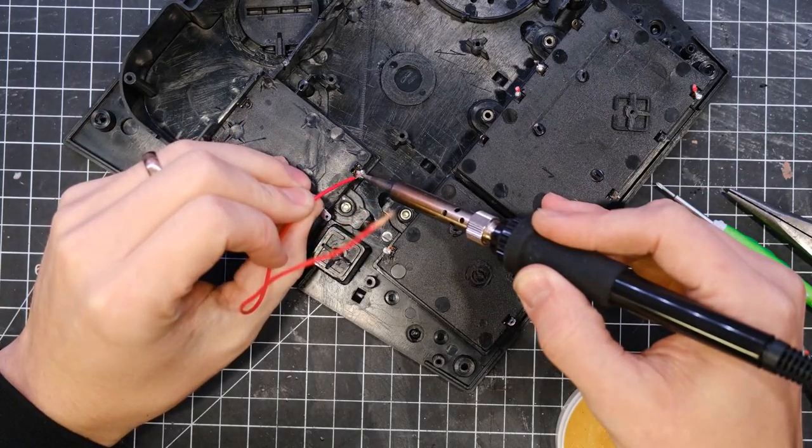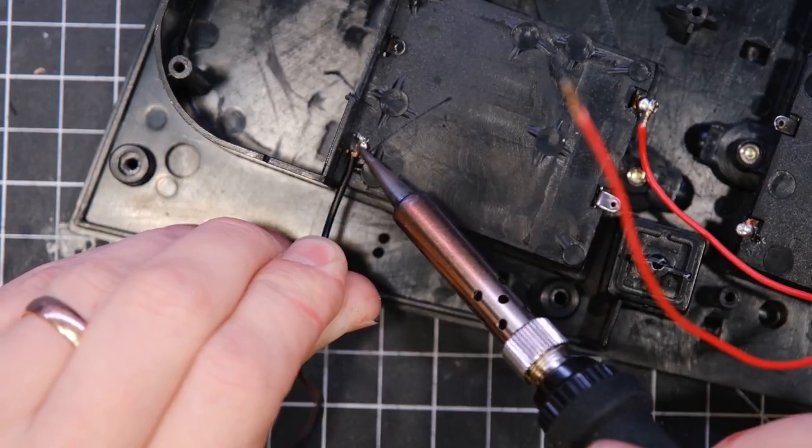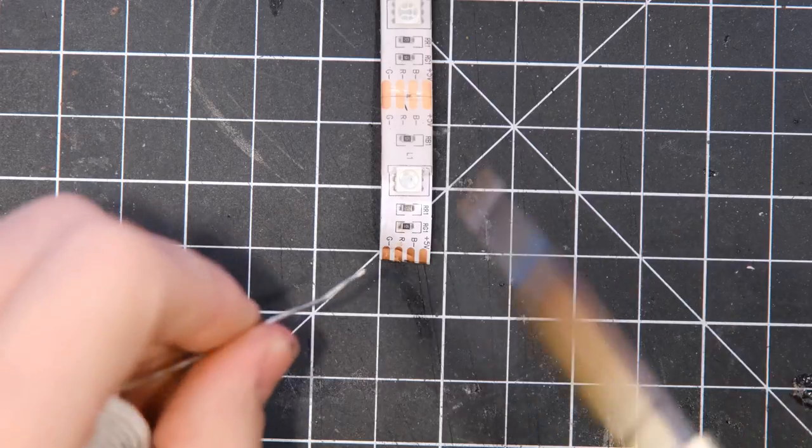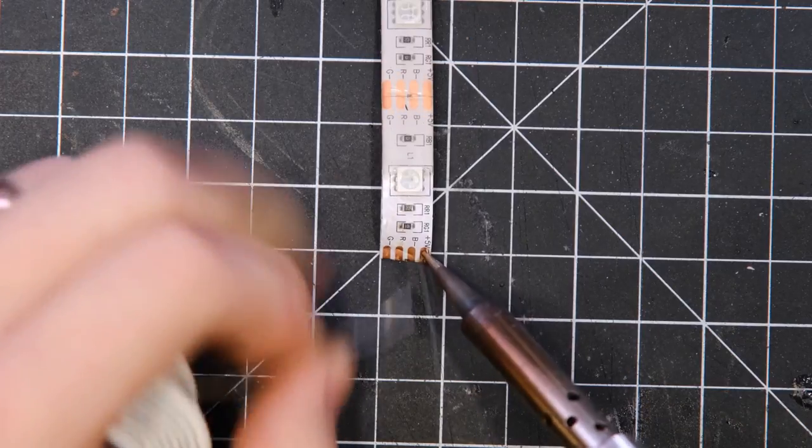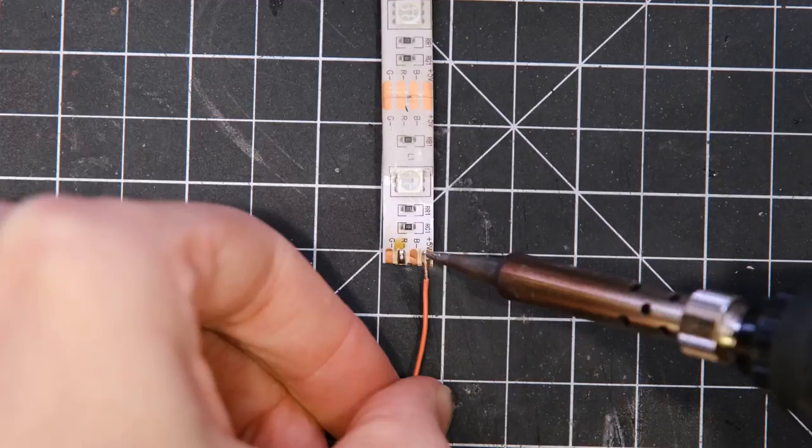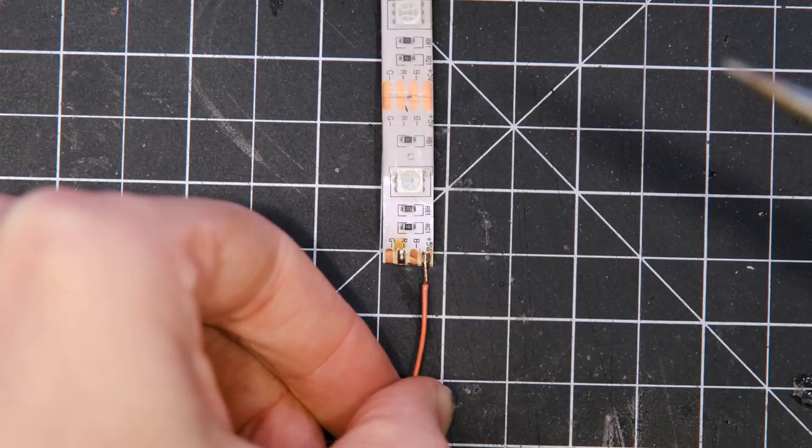I connected some wires to the terminals on the battery housing, as well as to the switch. And to be lighting this thing, I'm going to be using this LED tape. You wire up the positive and the negative of whichever color you want it to be. In this case, it was red.